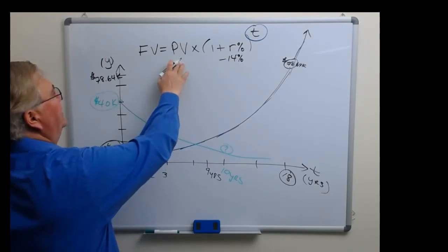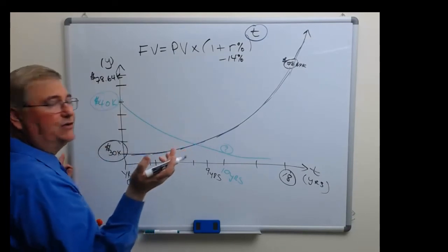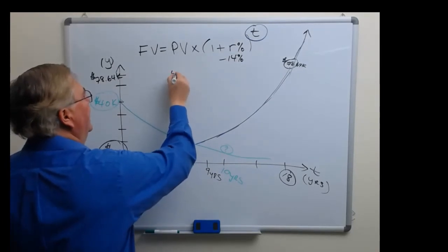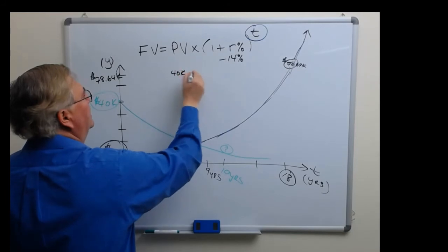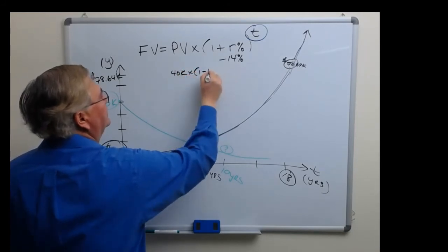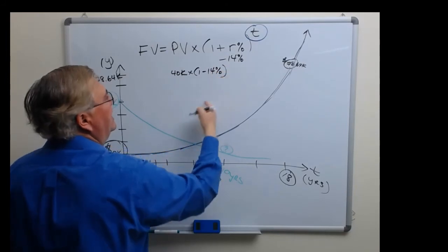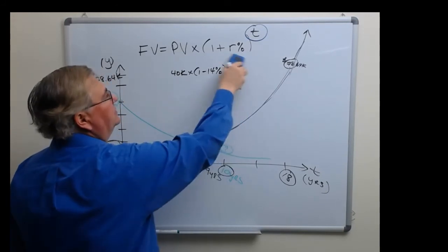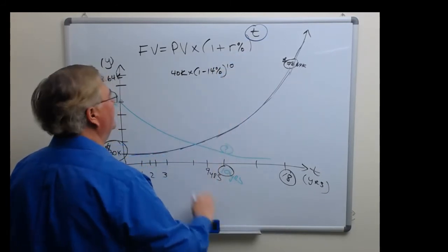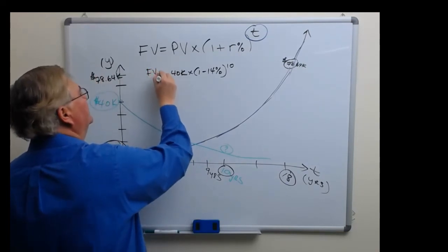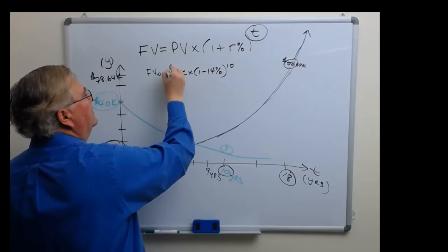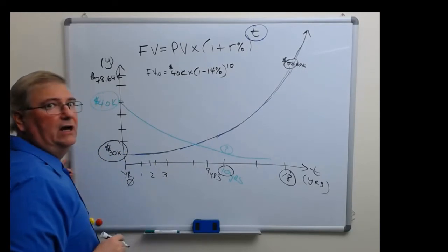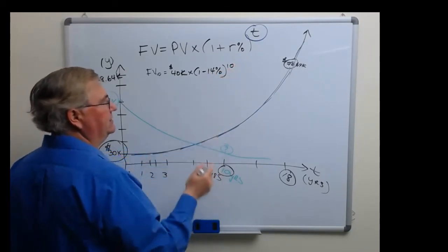Well, we could apply the future value formula to answer that. All we have to do is plug in the numbers. So the present value, we said in year zero, let's say you purchase the car at the dealer, it's a new car, so that's 40k. Multiply that by one minus 14 percent depreciation per year, and we'd like to know what it's worth 10 years from now, so that's t equals 10. The future value of this car in year 10 is equal to 40,000 present value, the starting price, multiplied by 1 minus 14 percent negative growth rate, 10 years from now, t equals 10.